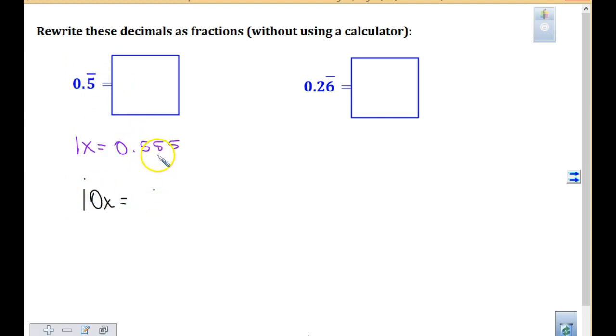When I write this new number, what do I get? When I move that decimal over once? 5.55. How many 5s do you need to write? Maybe 2 or 3 behind there, right? Does that make sense? All right, now what do I do with 10x and 1x? Next step.